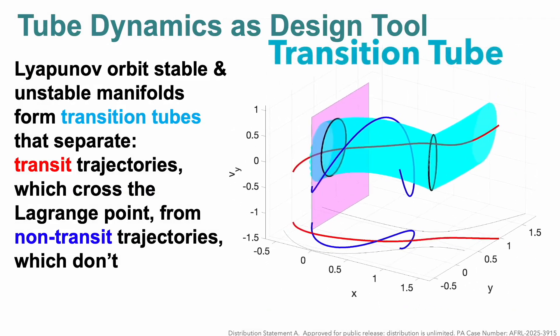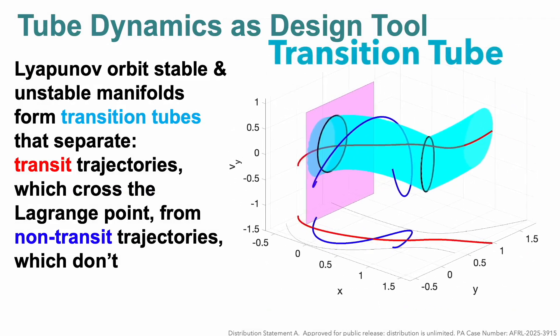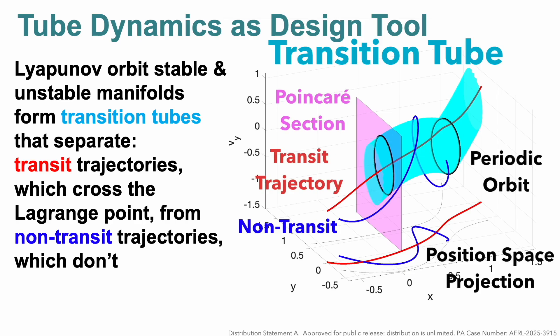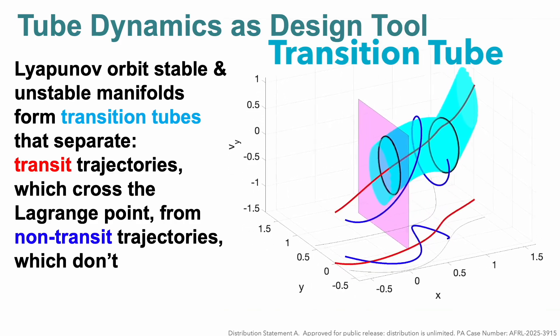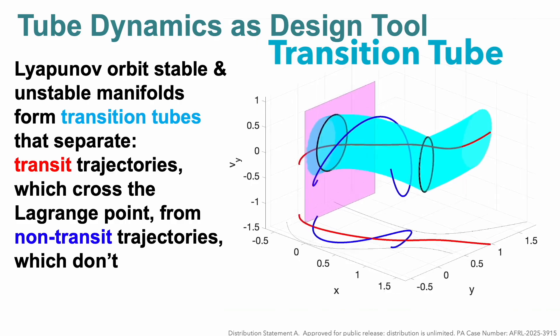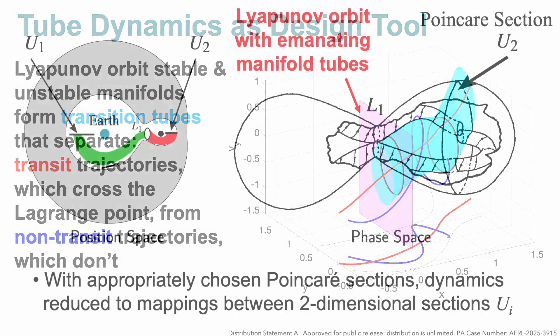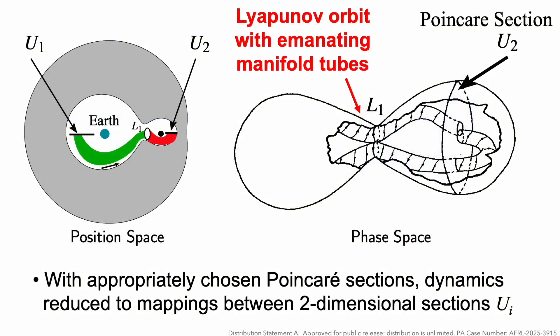We're going to be using tube dynamics as a design tool. This is using the Lyapunov orbit stable and unstable manifolds that form transition tubes that separate transit orbits, trajectories which cross the Lagrange point, from non-transit trajectories, which don't. We'll be using a Poincaré section as a dynamical systems tool to calculate what we're interested in. This is a schematic of what the dynamics of the tubes look like in an energy surface. We're looking for regions where tubes intersect one another.